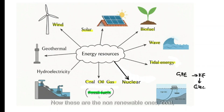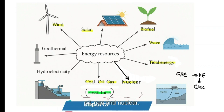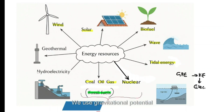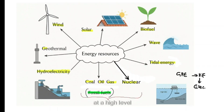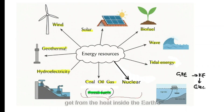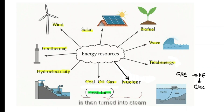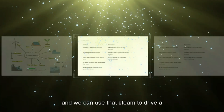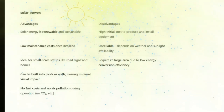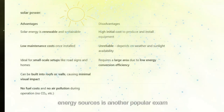Coal, oil, and gas are collectively called fossil fuels and are non-renewable, along with nuclear. Hydroelectricity uses the gravitational potential energy of water at a high level. Geothermal energy comes from heat inside the Earth's surface — radioactivity in rocks produces heat that is used to heat water into steam, which drives a turbine.